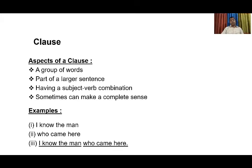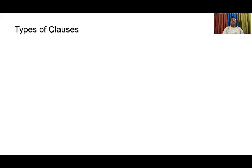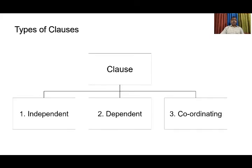So dear students, you can understand what a clause is. Now I will show you different types of clauses in a graph. Basically, clauses are of three types: first, independent clause — sometimes we call it a principal clause or main clause; second, dependent clause, also called subordinating clause; and thirdly, coordinating clause. Primarily, we have these three types of clauses.